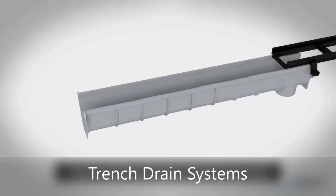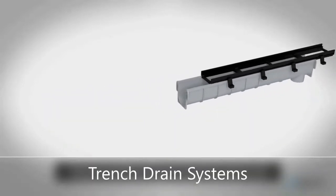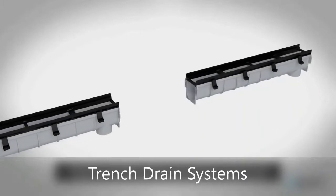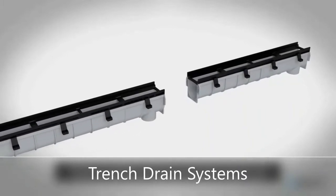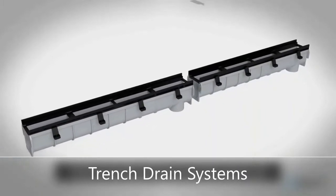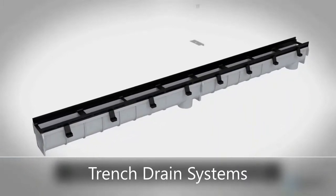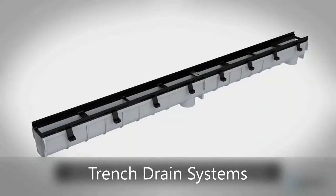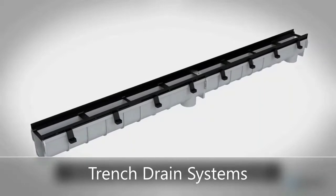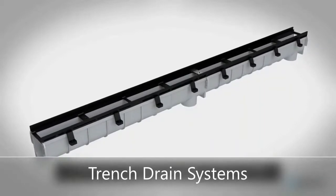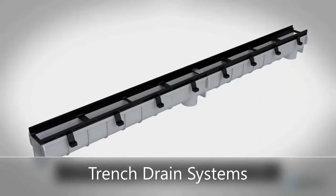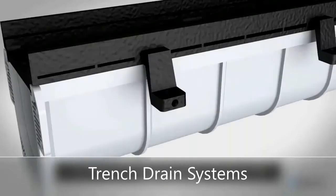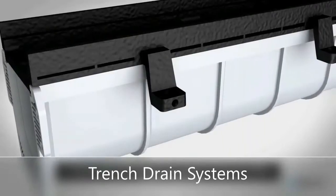Trench drains are straight drainage applications used to collect water from one point and transfer it somewhere else. A trench drain system is usually composed of a few different parts, including a channel, a grate, an end cap, and an end outlet.